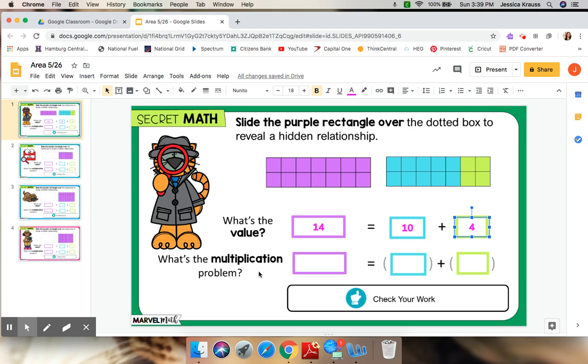Okay, so for the next part it says what's the multiplication problem? This is where we need our equation. And we know that for area we are using multiplication. So I'm going to count on the side. We have one, two, times one, two, three, four, five, six, seven. Two times seven, and I know that two times seven is fourteen.